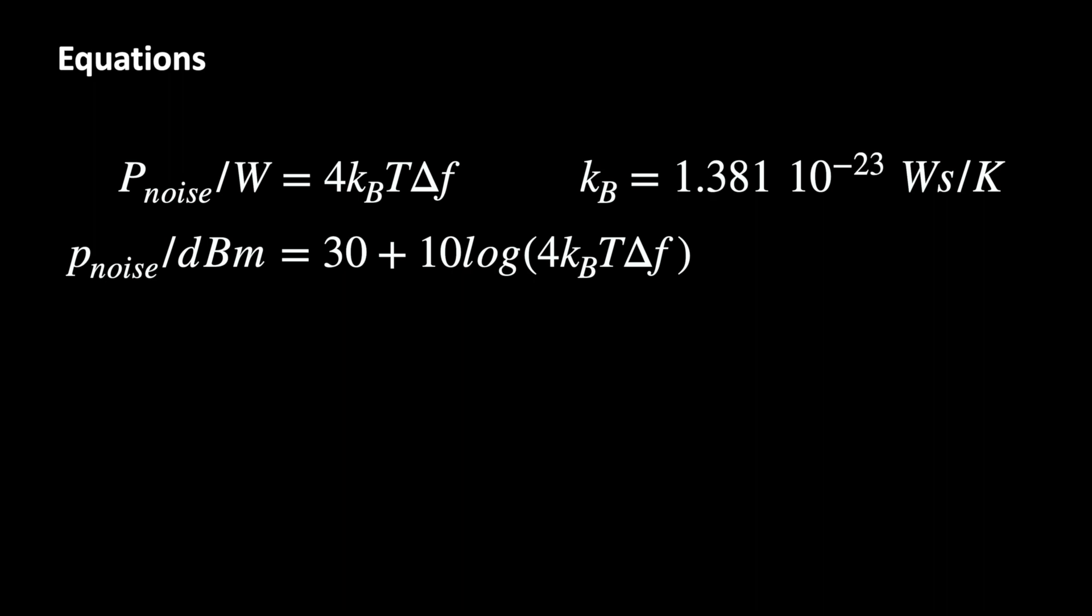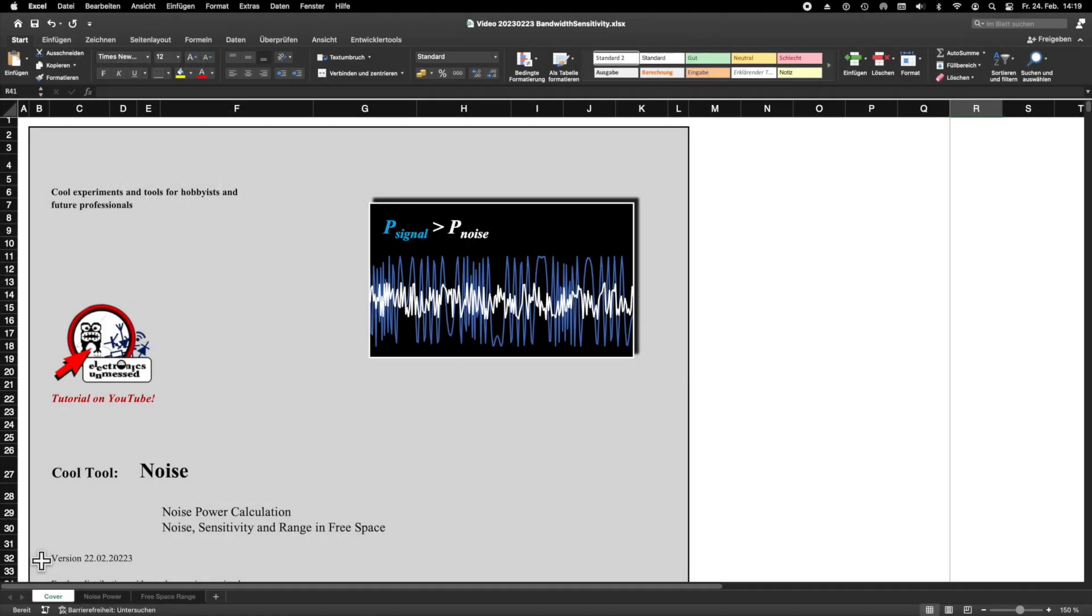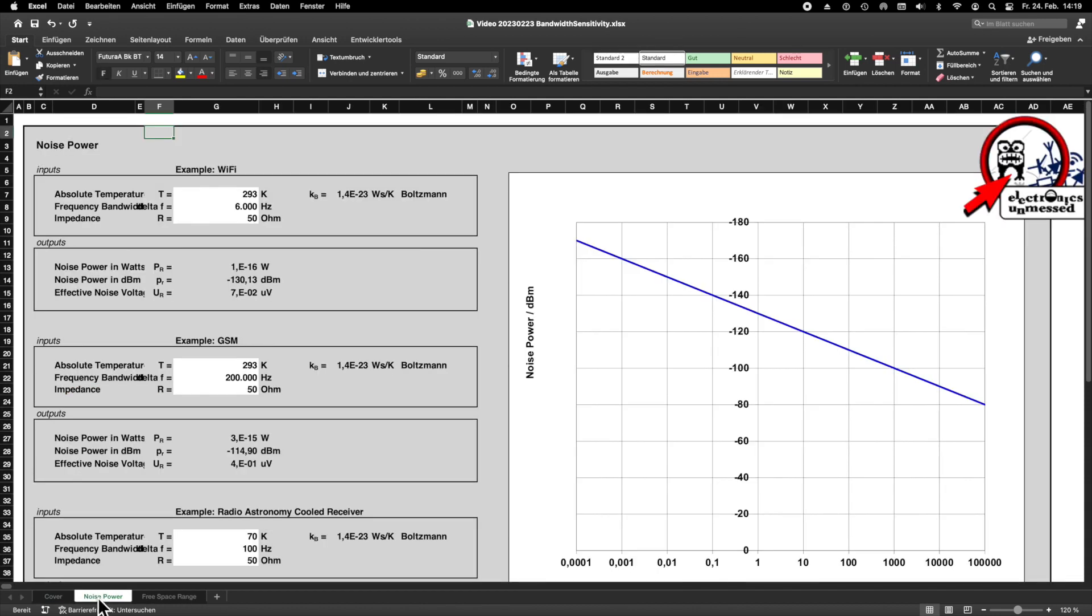In communications engineering people like to calculate with logarithmic values. So let's use the formula that gives us the noise power in dBm. We wouldn't be electronics unmessed if we didn't use a small Excel tool for the calculation. Of course you can use this for your own purposes and you can find it in the download section below.